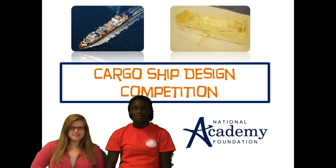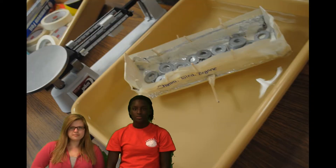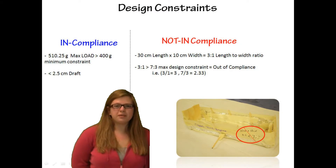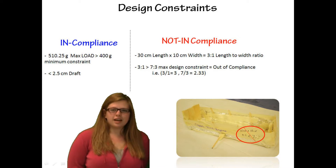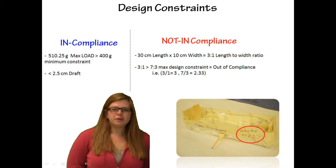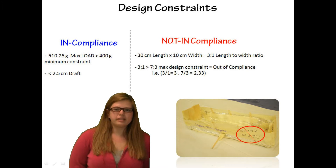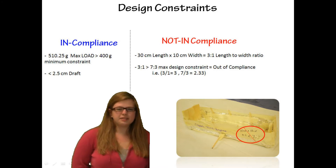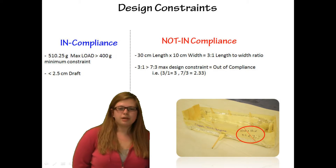Our team was close to winning the cargo boat design competition. We excelled at meeting the cargo load of 400 grams and achieving the 2.5 cm draft test. However, we were not in compliance with the 30 cm length and 10 cm width ratio. This design flaw made our boat too big. If we were to go back and change the design, we would recommend 20 cm in length and 10 cm width, which would have brought our design to a 2.1 ratio.